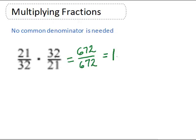You may be thinking I don't want to multiply 21 times 32 without a calculator. So what we can do is reduce ahead of time before multiplying. We notice that the first fraction has 21 in the numerator and the second has 21 in the denominator.